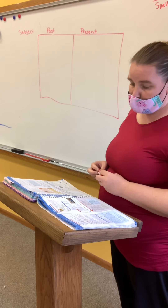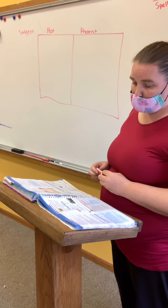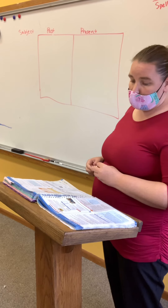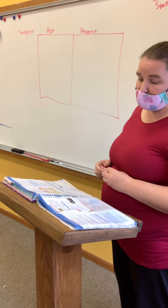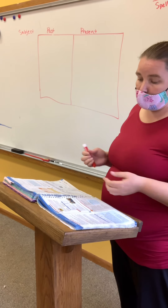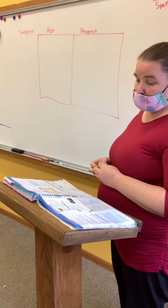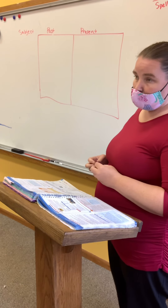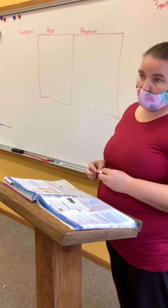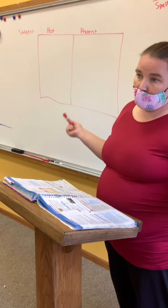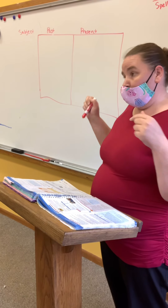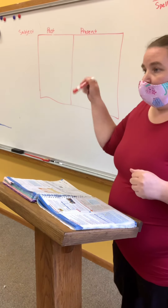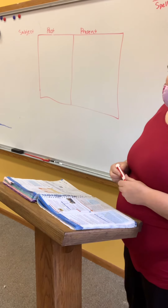The verbs am, is, are, was, and were are forms of the verb 'be.' They do not show action, but they tell what someone or something is or was, right? For example: I am a farmer. So my verb is 'am' — it's telling you who or what I am.